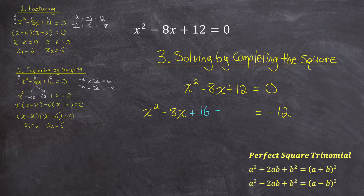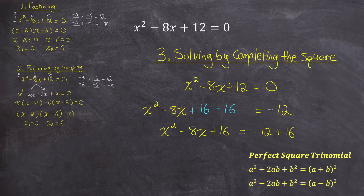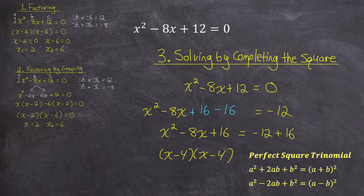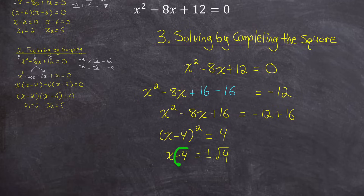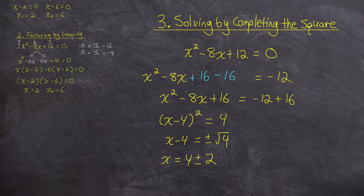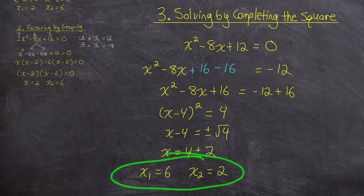Half of negative 8 is negative 4, and squaring it gives 16. I can't just add 16 to one side, so I'll add and subtract 16 on the left — effectively adding 0. Then I move the minus 16 to the right. On the left I have my perfect square trinomial, which factors to x minus 4 squared. On the right I have 4. Isolating x by taking the plus or minus square root of both sides, then moving negative 4 to the right, gives x equals 4 plus or minus the square root of 4, so plus or minus 2. That gives the two answers: 4 plus 2 equals 6, and 4 minus 2 equals 2.